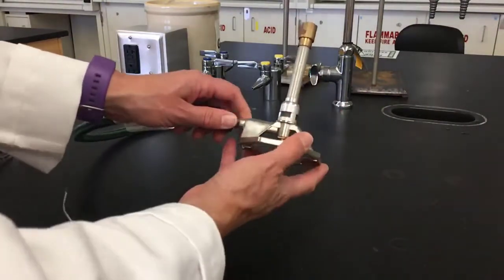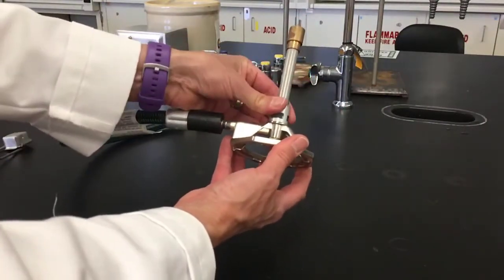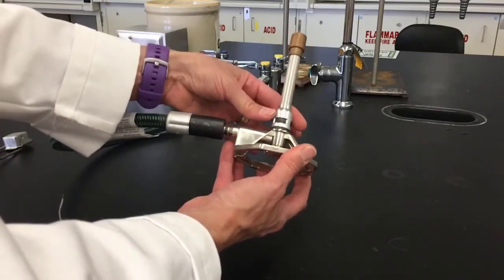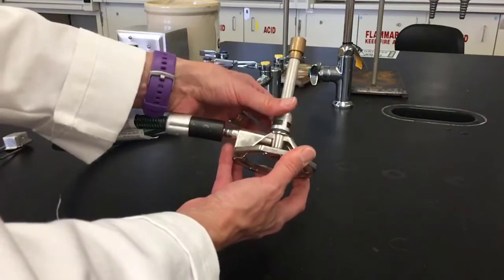The barrel is where the air and the gas will mix. In order to get the air in, you have to turn the barrel to open the air vent.